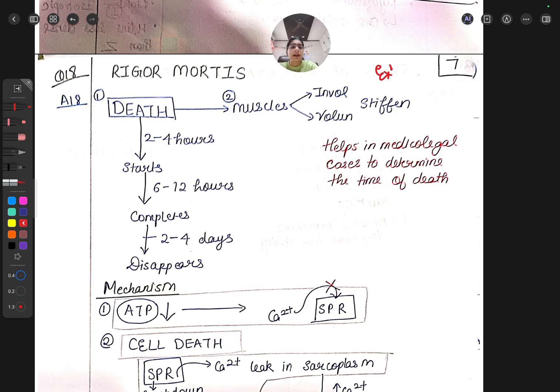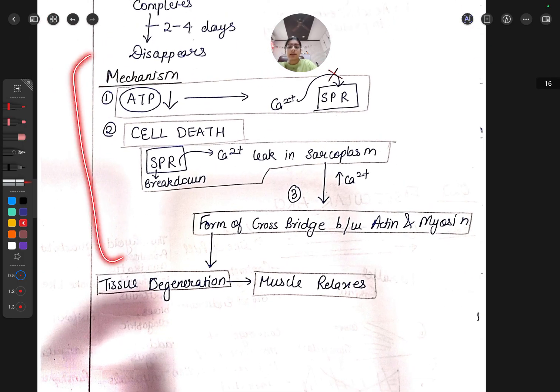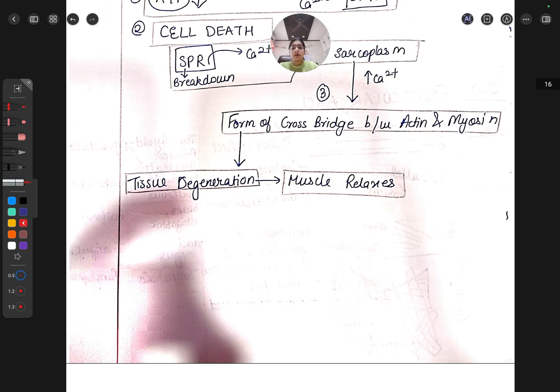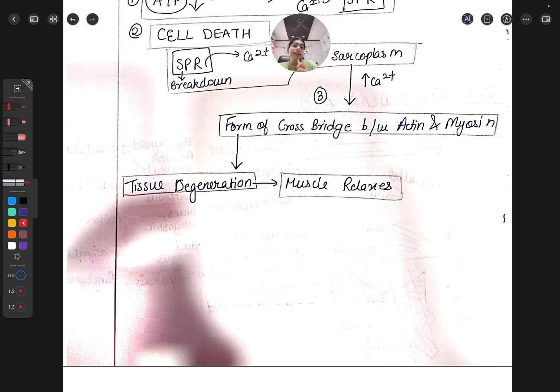Rigor mortis is from physiology but can come as 'explain why' or anatomical basis. Death to two to four hours it starts, six to twelve hours it completes, and after two to four days it disappears. Rigor mortis is involuntary stiffness in muscles. It helps in medico-legal cases to determine time of death. The mechanism: ATP is less, calcium won't enter sarcoplasmic reticulum, causing sustained contraction. Cell death occurs, SR breaks down, calcium leaks into sarcoplasm, and cross bridges form. It disappears because tissue and proteins degenerate after two to four days.